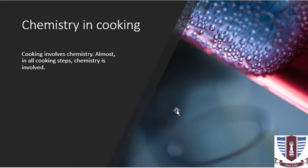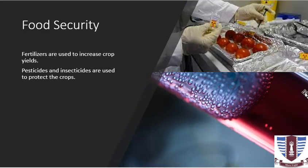Cooking is a very common phenomenon we observe in our daily lives. Chemistry is involved in almost all cooking steps. Chemistry explains how food changes as we cook it, how it rots, how to preserve food, and how our body uses the food we eat. This is not only about food consumption; chemistry is also involved in food production and food security. The famous green revolution to increase agricultural produce and ensure food security was triggered by the advent of inorganic fertilizers.